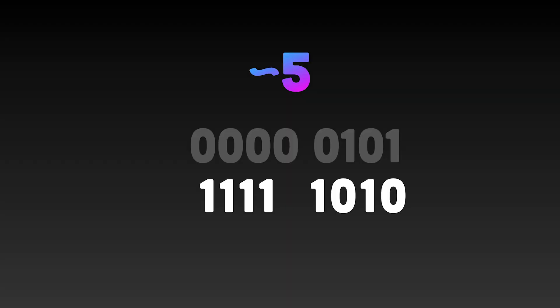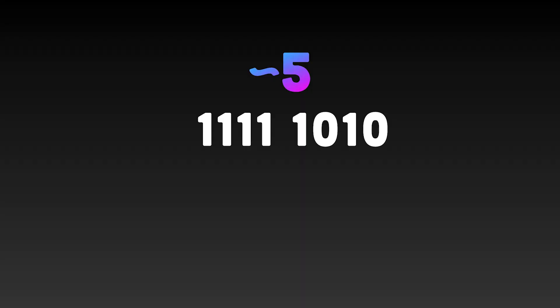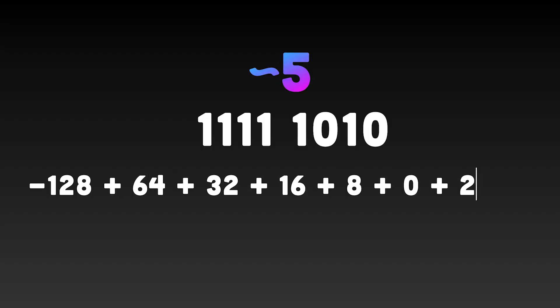Since Python uses an eight-bit number to represent small numbers, five looks like 0-0-0-0-0-1-0-1 in binary. Using the NOT operator reverses all the bits. Binary numbers use two's complement representation — if it's a negative number starting with one, the rest of the number counts up from minus 128. So taking this number and starting from minus 128 and adding on all the other bits gives a final result of minus six.